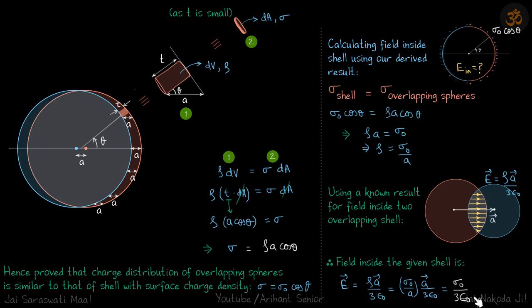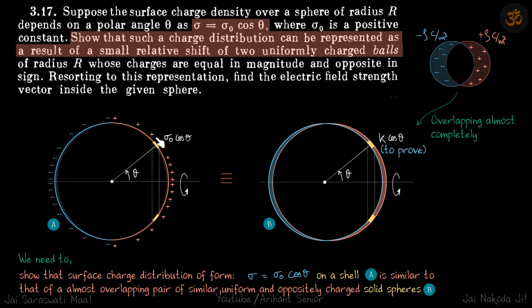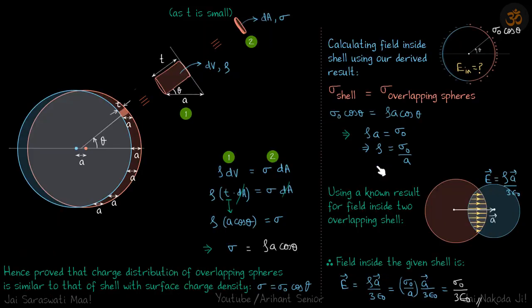What we have done magically here is we have calculated the field inside this shell without doing integration, by comparing this charge distribution to that of an overlapping sphere. And for an overlapping sphere, we know that the field inside is just rho A by 3 epsilon. We substitute the value of rho by comparing the two and got our answer sigma not by 3 epsilon.